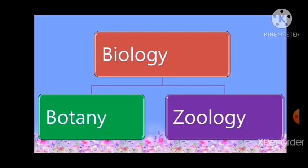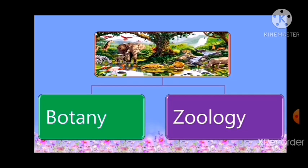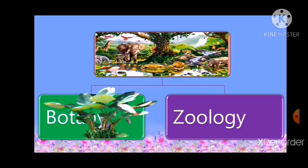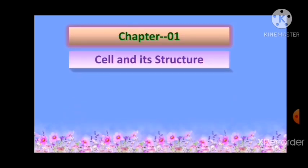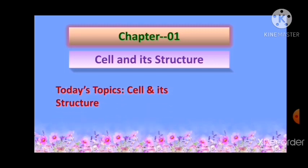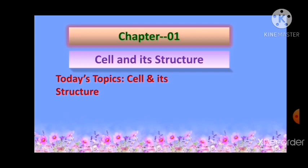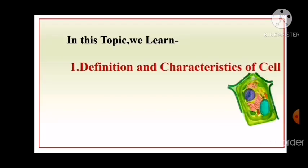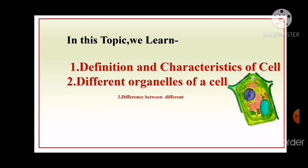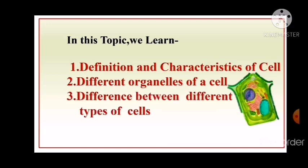Dear students, you know Biology has two parts: Biology first part or Botany, and Biology second part or Zoology. I will discuss the contents of Biology first part. There are 12 chapters in your Botany book. Today I will discuss chapter 1, cell and its structure. In this topic, we will learn the definition and characteristics of cell, different organelles of a cell, and the difference between different types of cells.